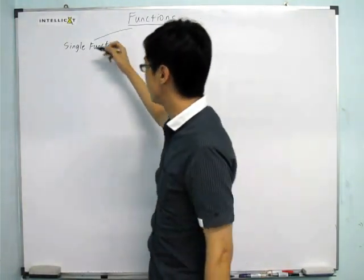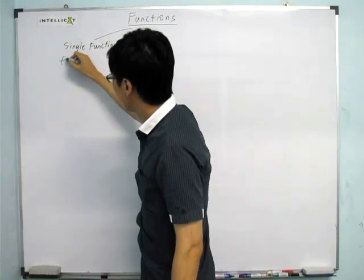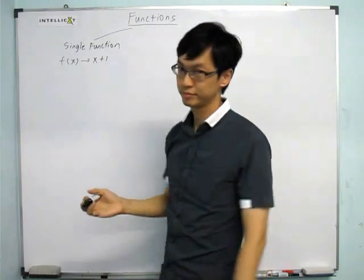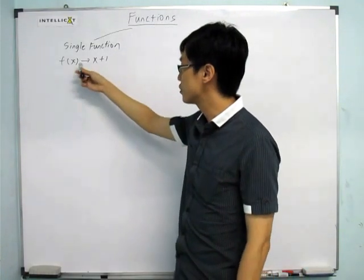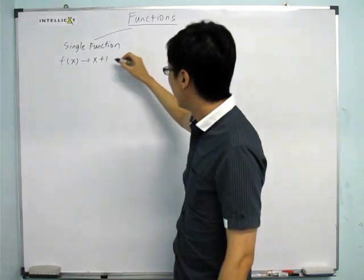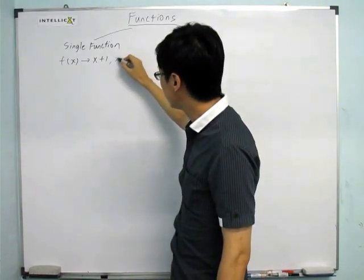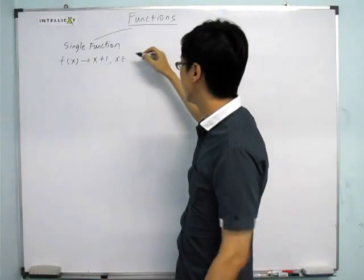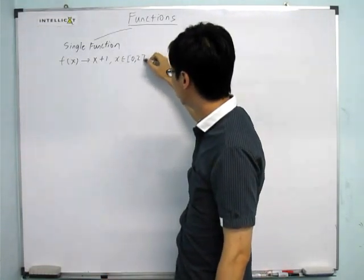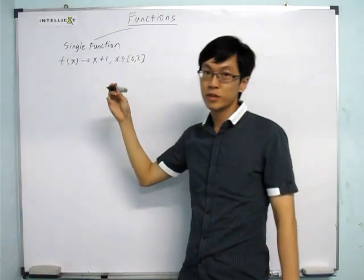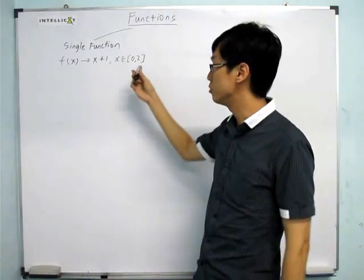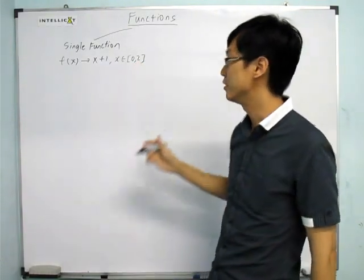Let's give a simple example. f(x) = x + 1. This is the function that means I'm mapping x into x + 1. And usually, behind the function, you will see this thing called the domain. For example, x belongs to [0, 2]. This means that x will only take values between 0 and 2 — no other values.